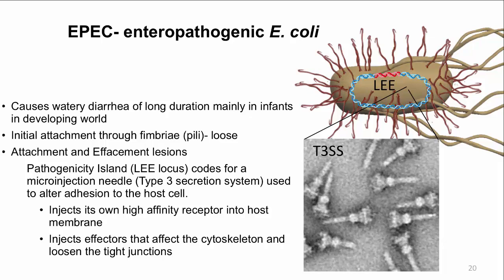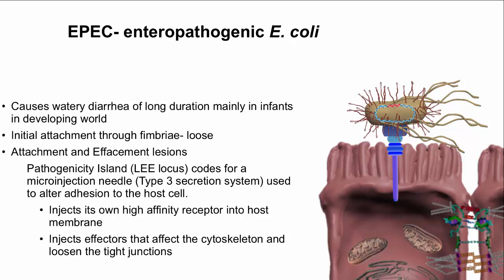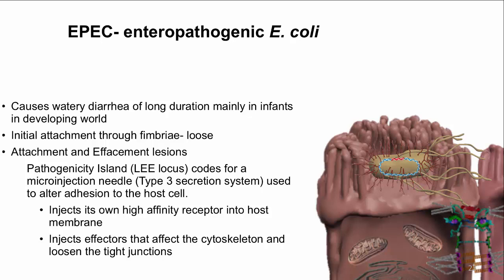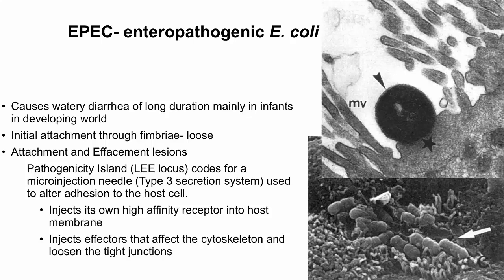The pathogenesis of EPEC is incredibly sophisticated. Here's a diagram showing EPEC attaching to the cell and inserting the type 3 secretion system. Through the microscopic needle, it injects a high-affinity receptor and effector proteins that destroy the microvilli, causing the cytoskeleton to create a pedestal. The end structure is called an attachment and effacement lesion. EPEC also injects proteins that loosen the tight junctions between cells. The destruction of microvilli and loosening of tight junctions contribute to watery diarrhea. Electron micrographs of human duodenal biopsy tissue show EPEC bound to an attachment and effacement lesion, with bacteria on top of a pedestal and many bacteria attached to cell surfaces.